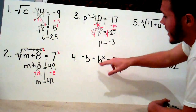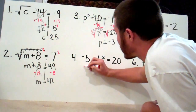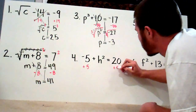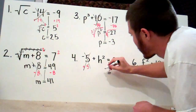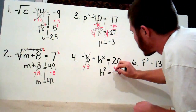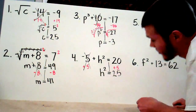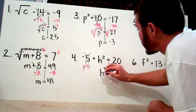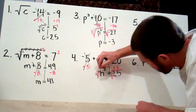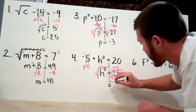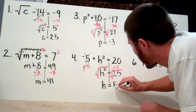Next: negative 5 plus h squared equals 20. The first thing I want to do is get rid of that loose number, the negative 5. So I do the inverse, which is positive 5, on both sides. These are gone, leaving h squared equals 25, since 20 plus 5 is 25. Last step: get rid of that exponent. The inverse of squaring a number is finding the square root, so I take the square root of both sides. These cancel, leaving h, and the square root of 25 is 5.